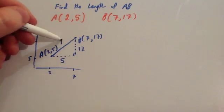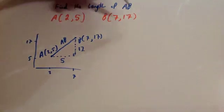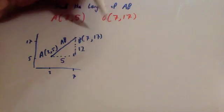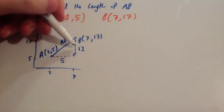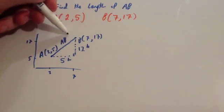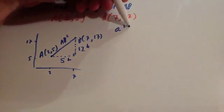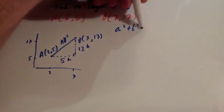So to find this length here, let's call it AB, suppose it is AB, then you're going to use Pythagoras' theorem. Remember the short side, middle side, longer side, so it's going to be A, B, C. So A squared plus B squared equals C squared.